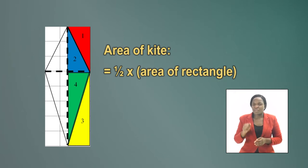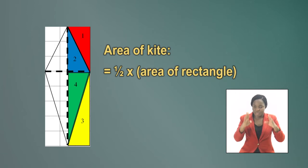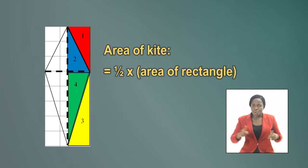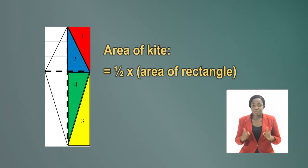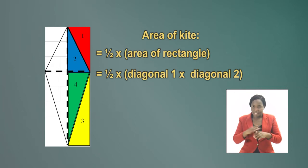But we cannot say a half times length times breadth because the kite doesn't have a length and a breadth. Instead of using length and breadth, we can use the long diagonal and the short diagonal. The diagonals have the same dimensions as the original rectangle.